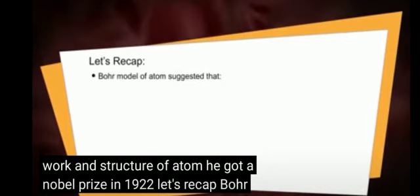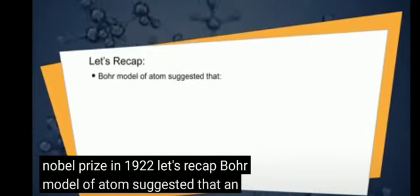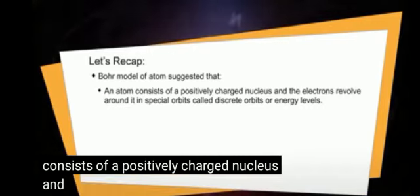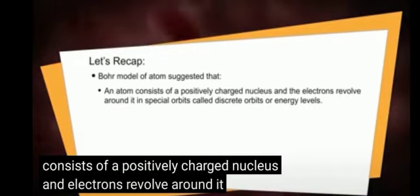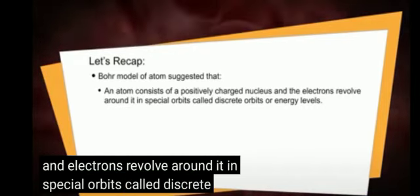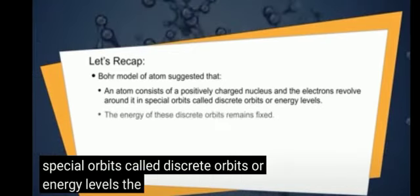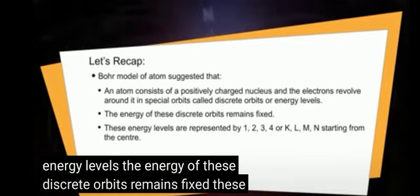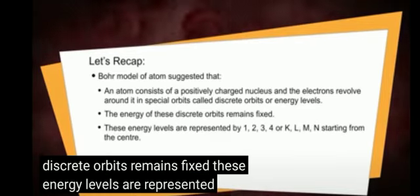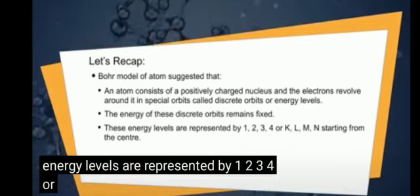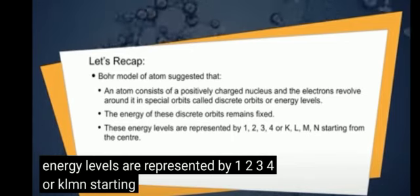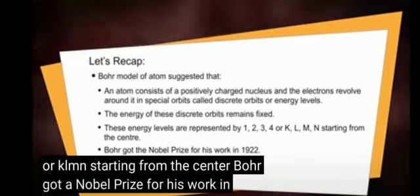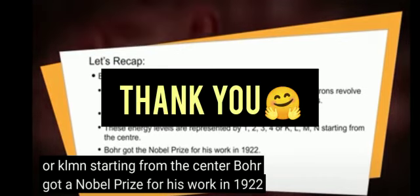Let's recap Bohr's model. Bohr's model suggests that an atom consists of a positively charged nucleus, and electrons revolve around it in special orbits called discrete orbits or energy levels. The energy of these discrete orbits remains fixed. These energy levels are represented by 1, 2, 3, 4, or K, L, M, N, starting from the center. Bohr received a Nobel Prize for his work in 1922.